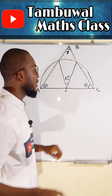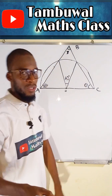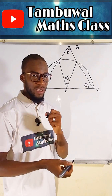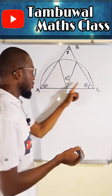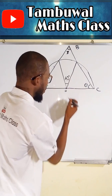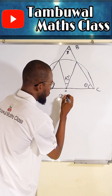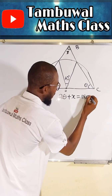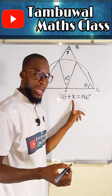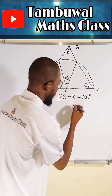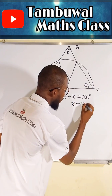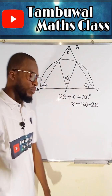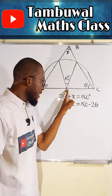Let me start with the three angles in a triangle. If you add all the angles inside, you must get 180 degrees. So theta plus theta is 2 theta, plus X, equals 180 degrees. Our main target is to find X, so we make it the subject: X is equal to 180 minus 2 theta.